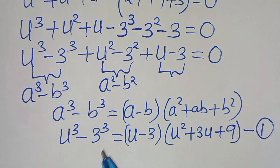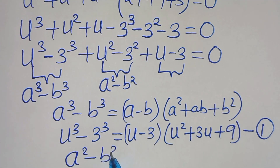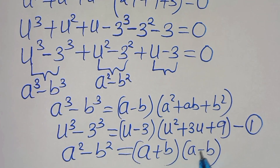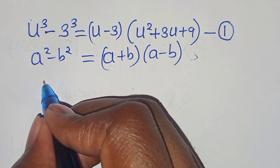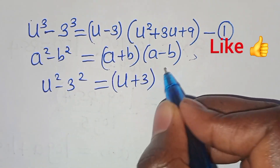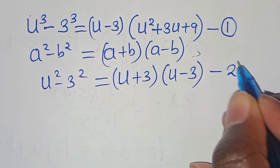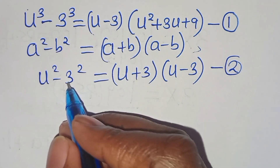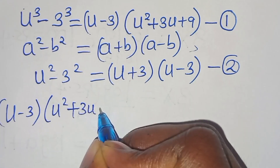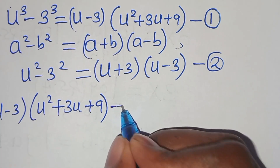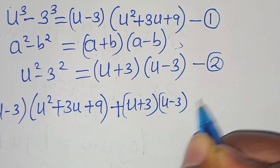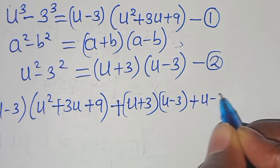For the second part, the difference of two perfect squares, a² minus b², can be expressed as (a plus b)(a minus b). Applying this identity, u² minus 3² equals (u plus 3)(u minus 3). Let's call this equation 2. We can now combine these so that we have (u minus 3)(u² plus 3u plus 9) plus (u plus 3)(u minus 3) plus (u minus 3), this is equal to 0.